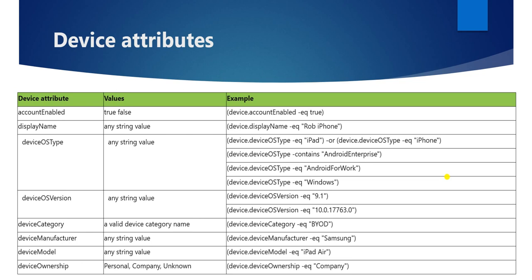Let's understand the attributes — how we can write the query to detect devices. For account enabled, you can write: device.accountEnabled -eq true, which will return all account-enabled devices in your Intune console. With displayName you can search by name. For OS type, if you want all Windows machines you write: device.osType -eq Windows. For iPhone or iPad you write: device.deviceType -eq iPhone or iPad.